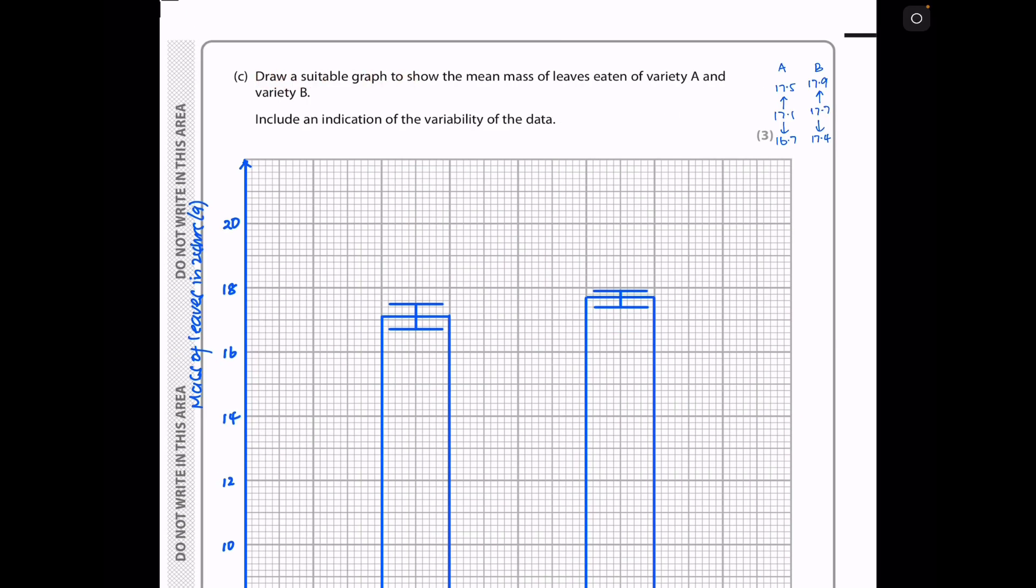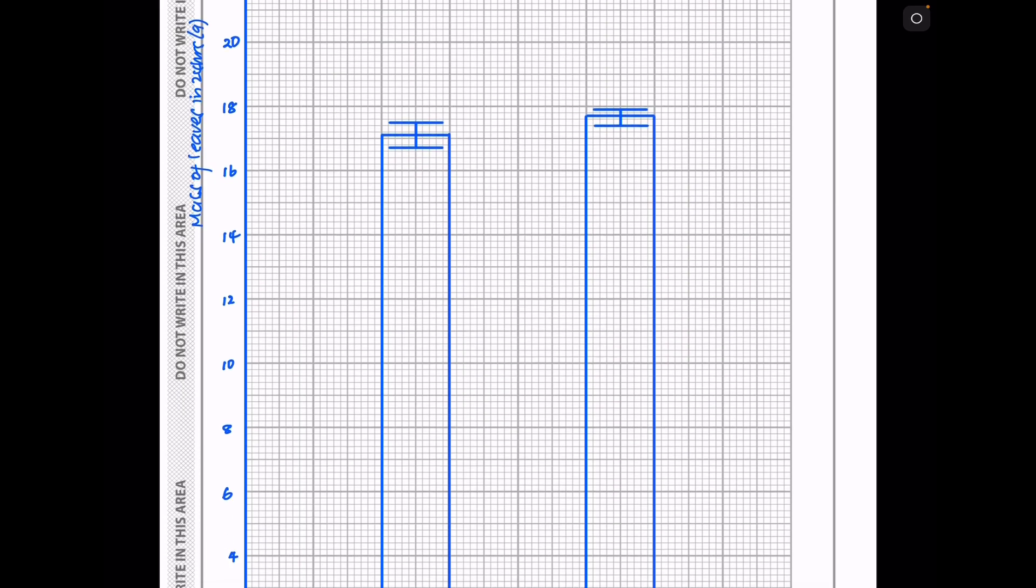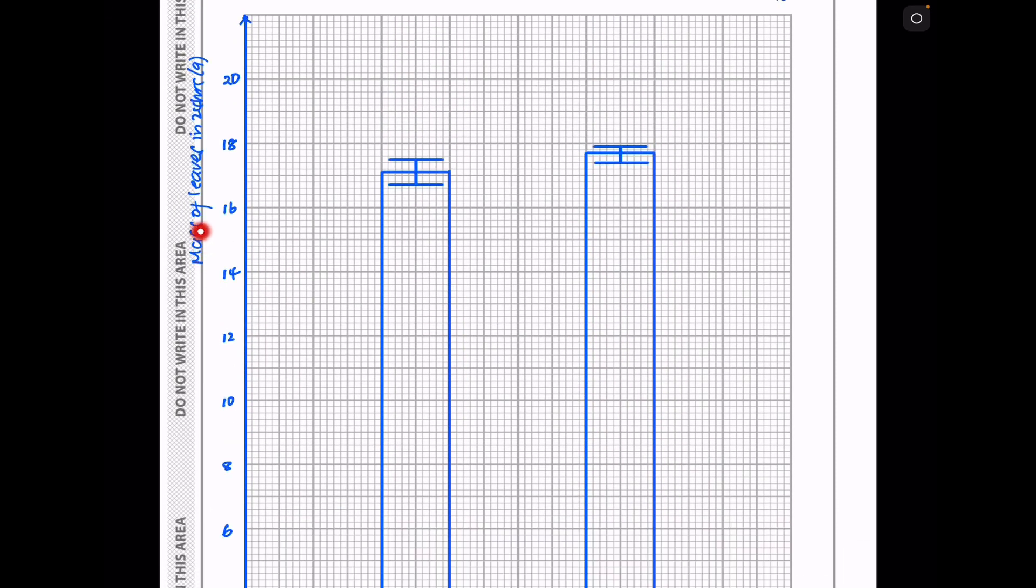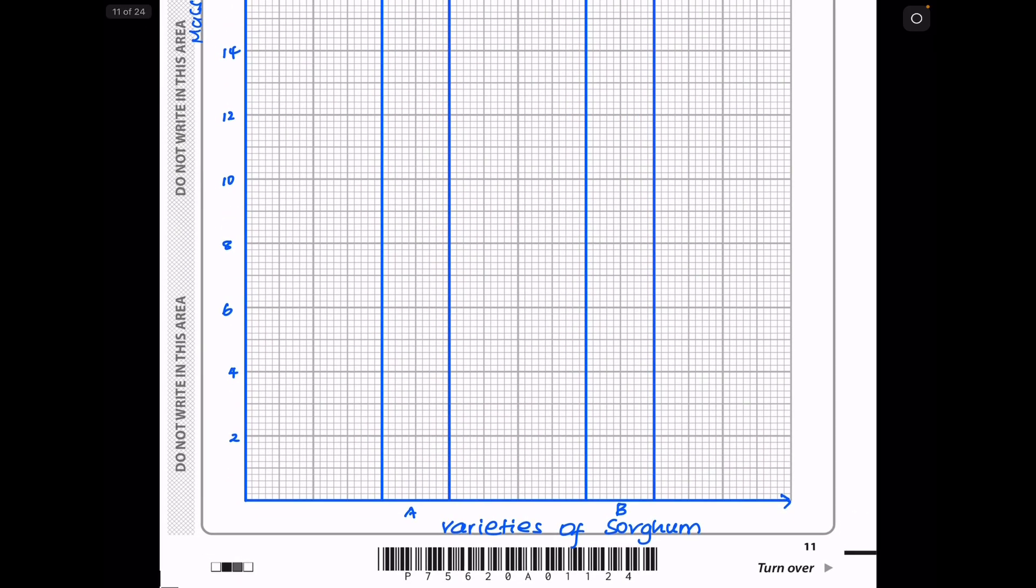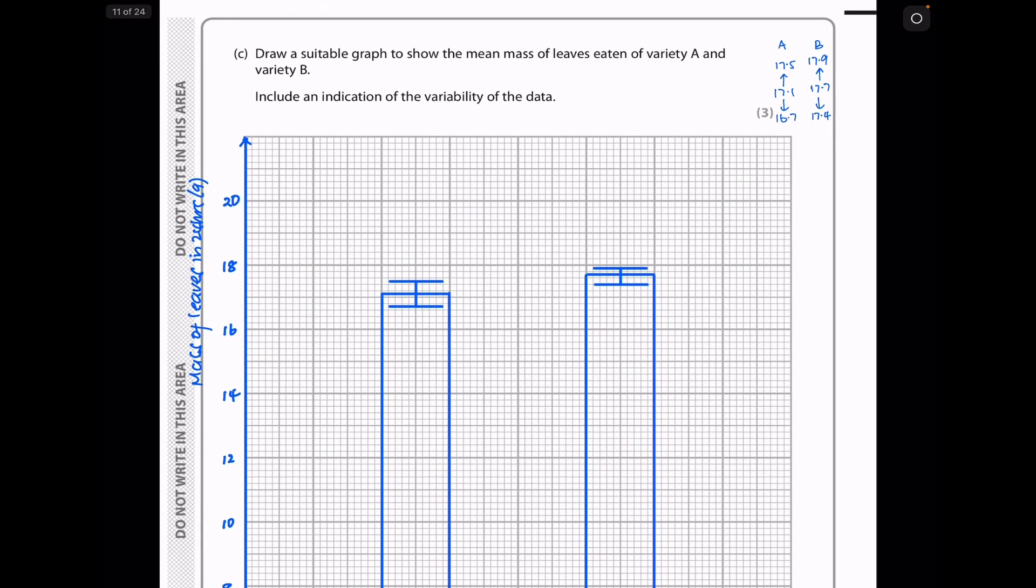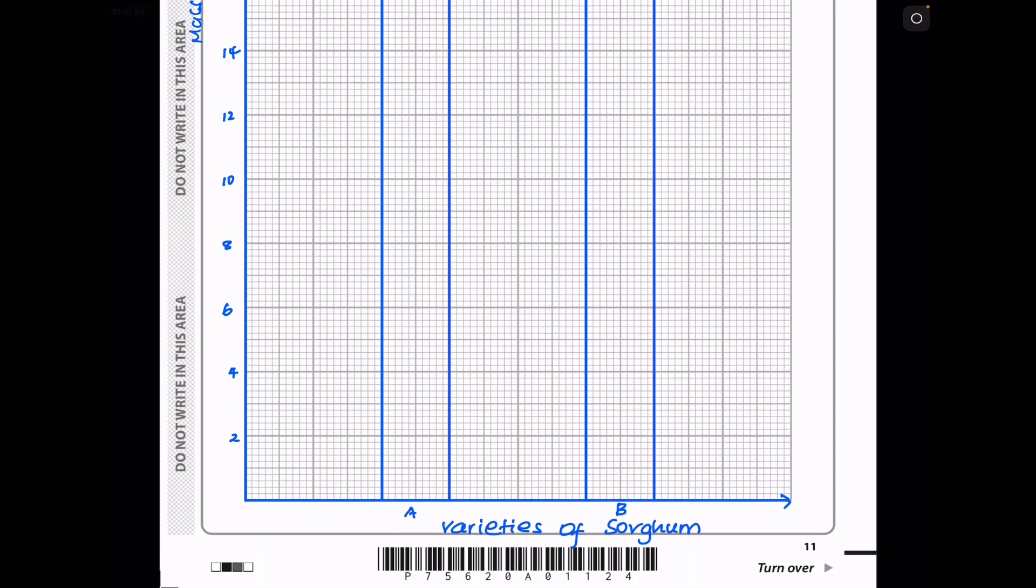In part C, they said draw a suitable graph to show the mean mass of leaves eaten by variety A and variety B, and they want you to include an indication of variability of the data. When they say include variability in the data, it means they want you to position the error bars. So based on the data, this is supposed to be a bar graph. And on the vertical axis, I have the mass of the leaves in 24 hours in grams. And on the horizontal axis, I have the variety of sorghum. This is variety A and variety B. And my mean for variety A is 17.1. We can see it's that one here. Here my mean is 17.7. The highest value for variety A is 17.5, and the lowest value is 16.7. While here the highest value is 17.9, and the lowest value, which is this one here, is 17.4. So if you present your bar graph like that, you would get four marks. Usually, these are one to three marks.